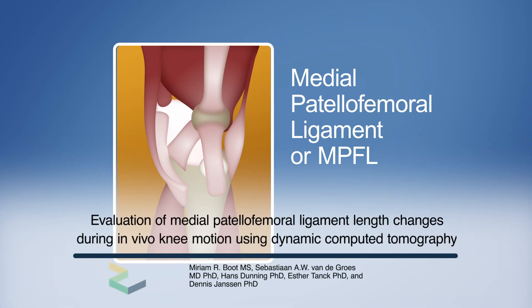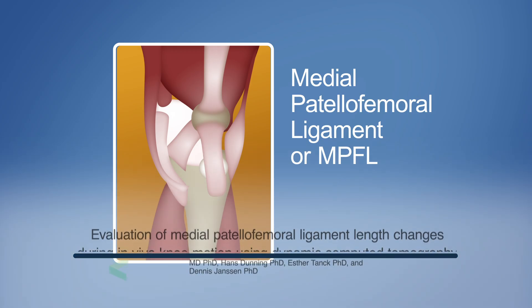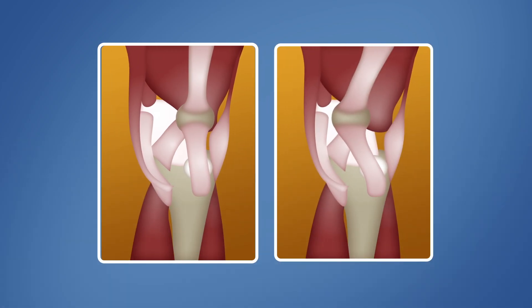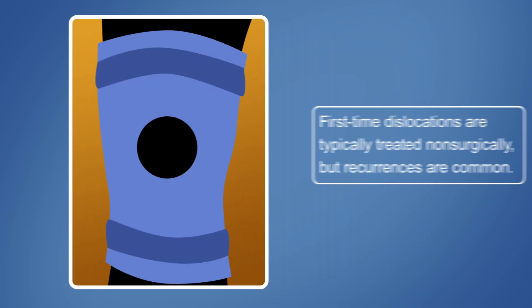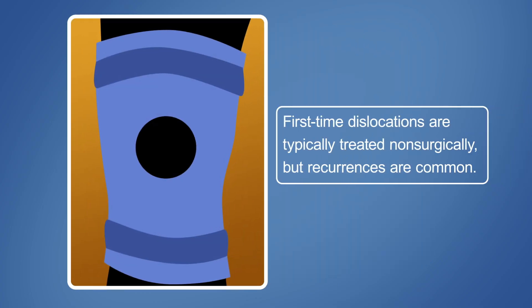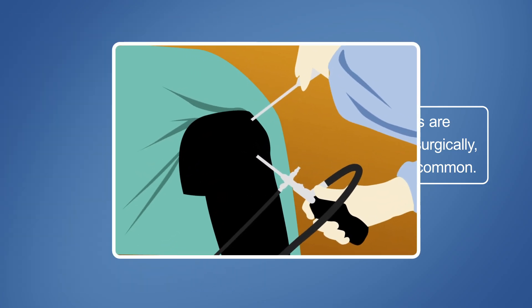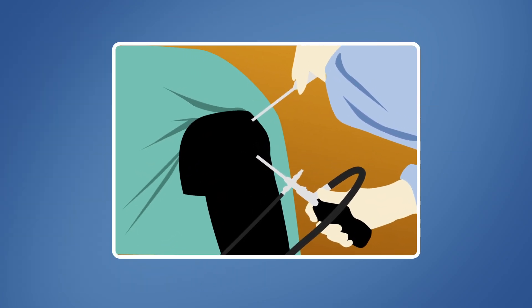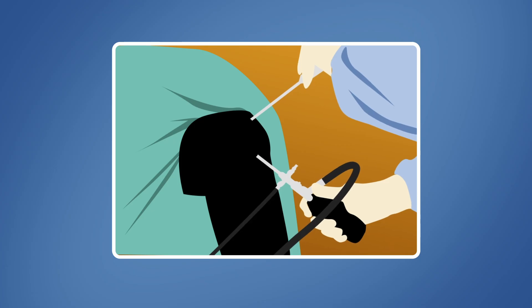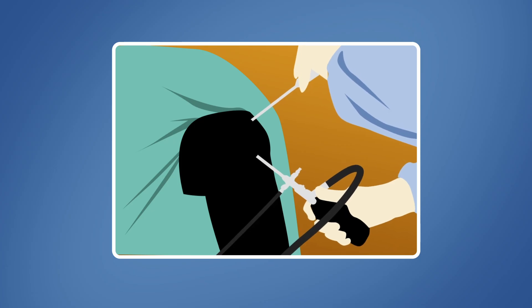The medial patellofemoral ligament, or MPFL, is the primary medial stabilizer of the patella. The MPFL almost always tears during patellar dislocation. First-time dislocations are typically treated non-surgically, but recurrences are common. For these cases, and in the absence of other risk factors, surgical MPFL replacement is preferred.